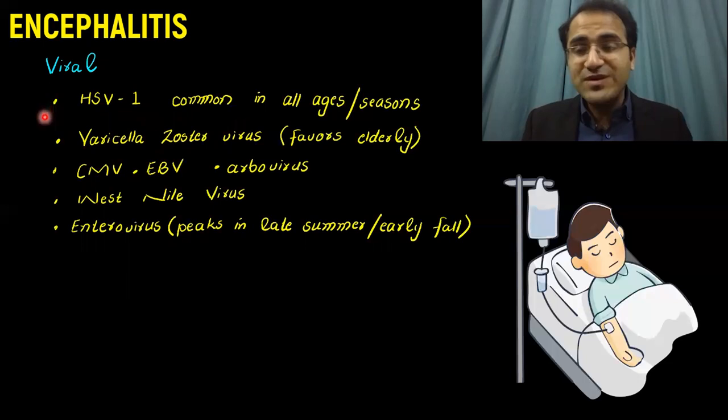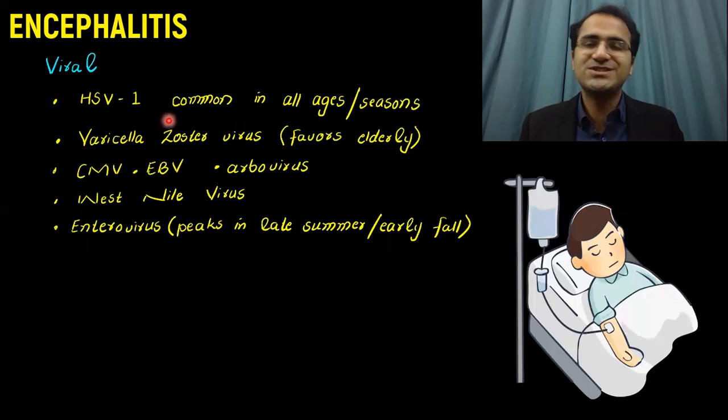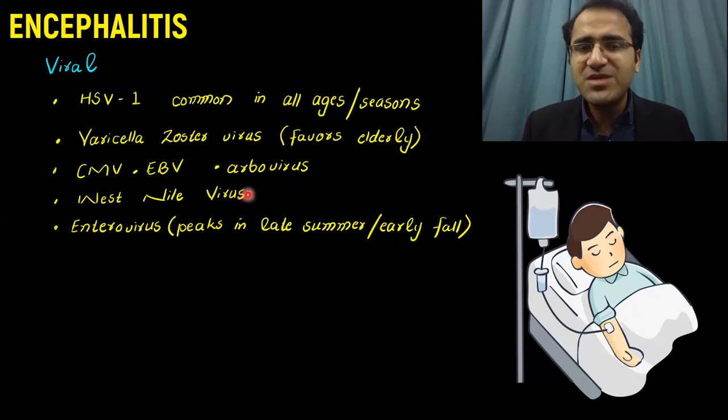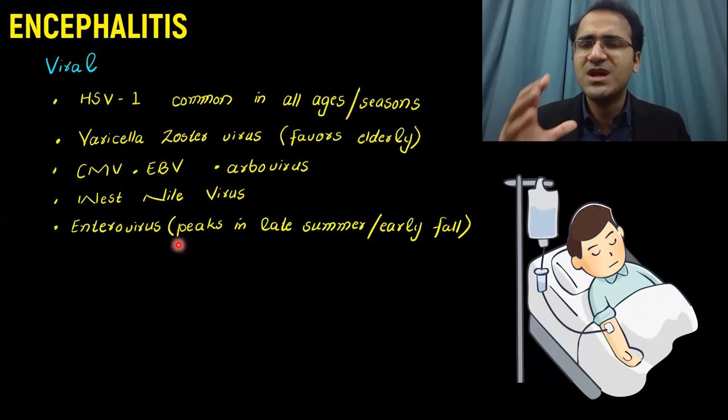Causes of Encephalitis can be divided into two categories: viral illness and non-viral illnesses. Viral illnesses most commonly include herpes simplex 1 virus, which is common in all ages and all seasons and is a very important common cause of Encephalitis. Varicella zoster virus favors the elderly. CMV, Epstein-Barr virus, Arbo virus, West Nile virus, and Enteroviruses can also cause Encephalitis.